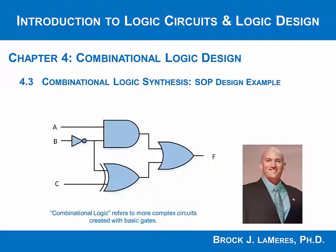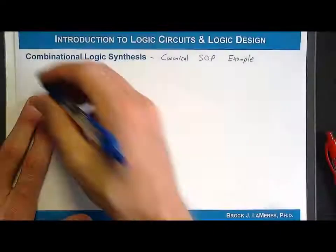At this point, we've looked at a canonical combinational logic synthesis approach using a canonical sum of products, and we introduced the notion of a minterm list. So let's do an example where we start with a minterm list, look at it, derive what the truth table was, and then use that to directly synthesize the logic diagram.